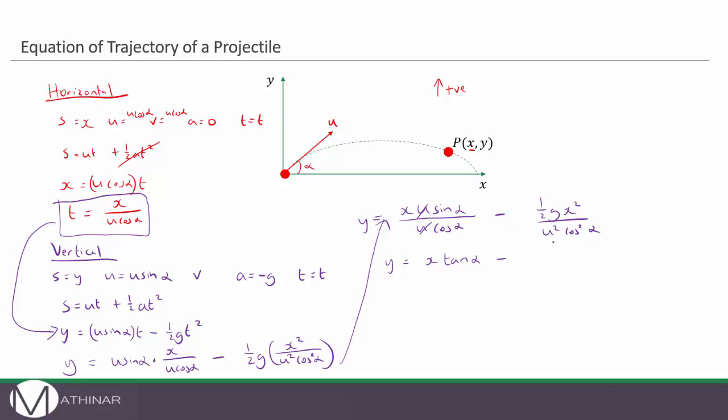Over on this side we can rewrite this as minus and we can take this two to the bottom so it becomes two u squared. So g x squared over two u squared and then we have a cos squared alpha on the bottom which I'm just going to rewrite as one over cos squared alpha.